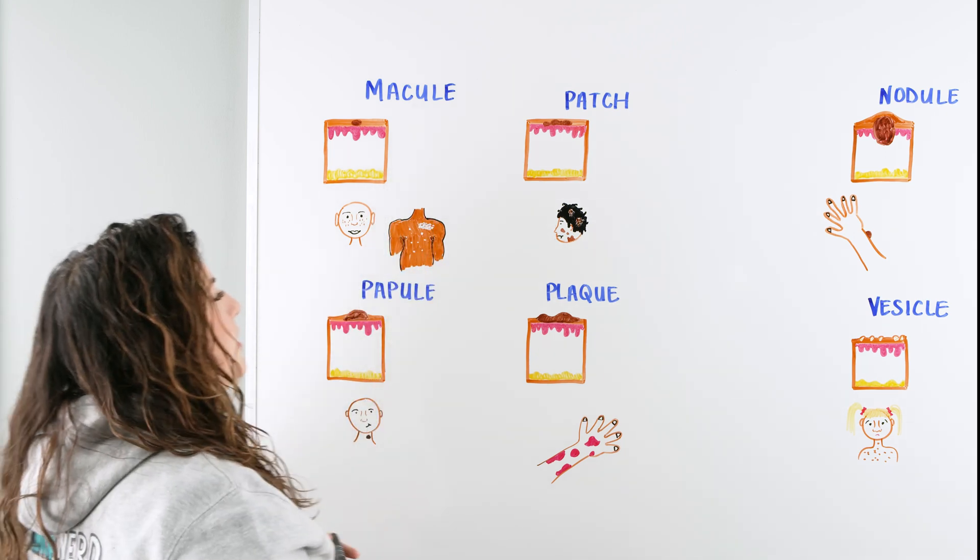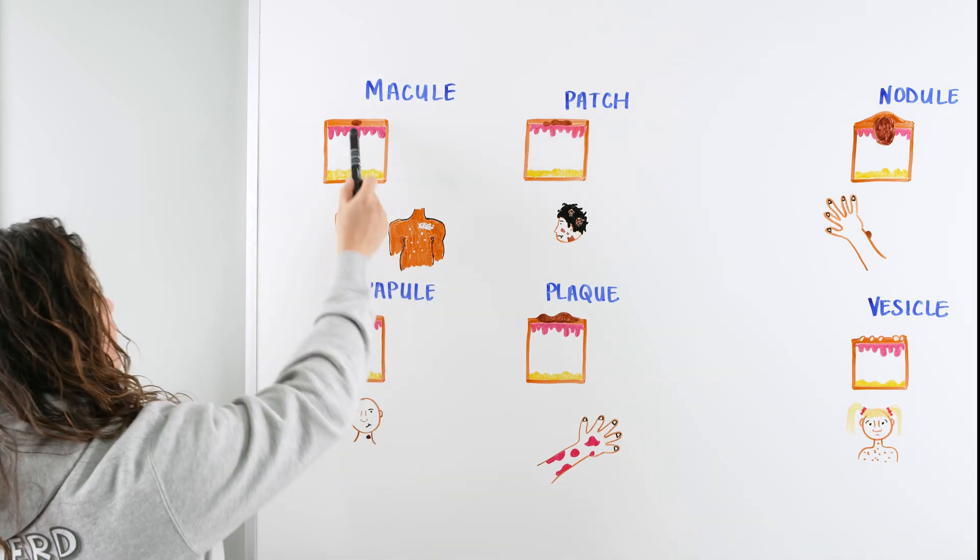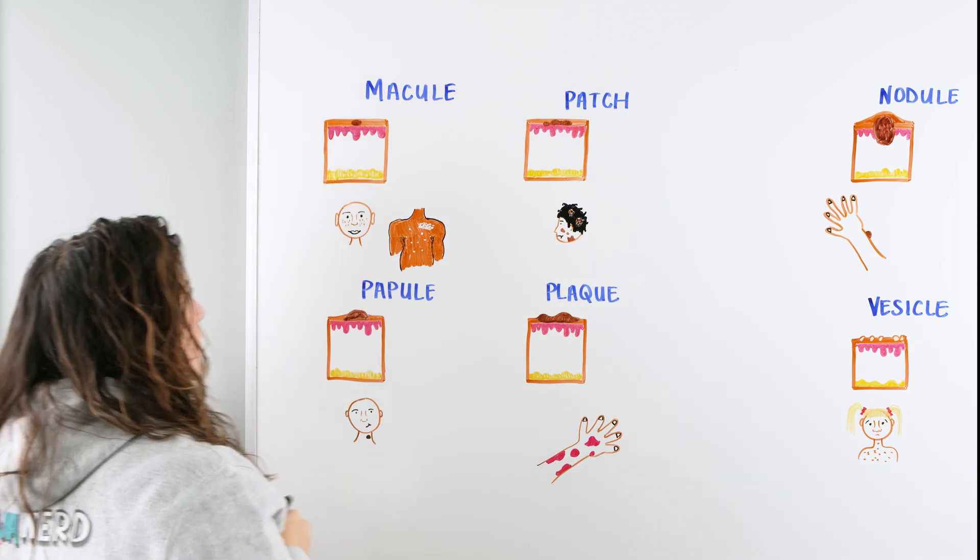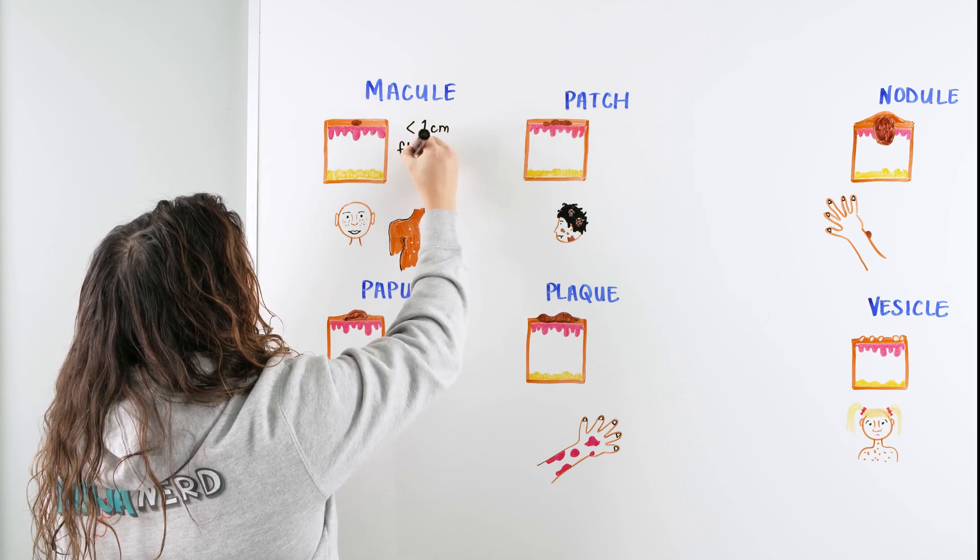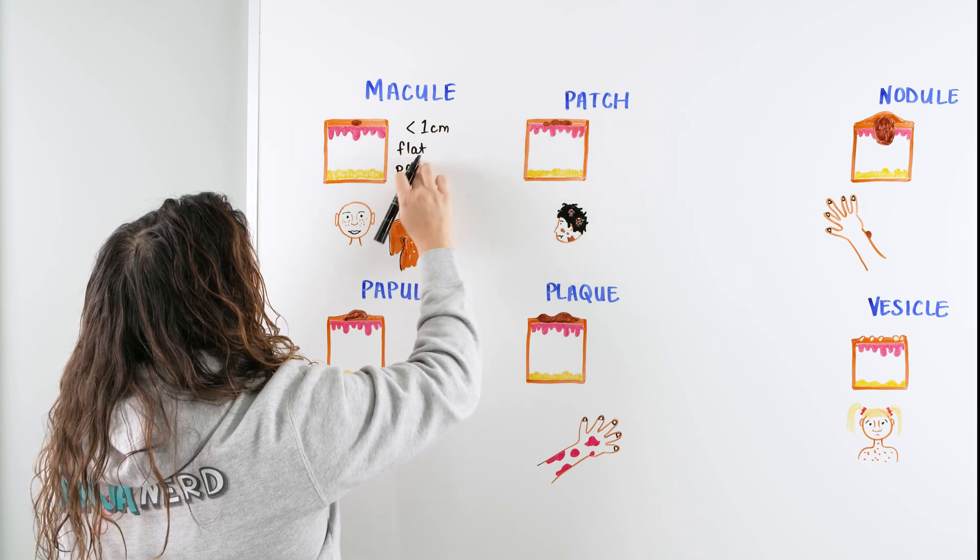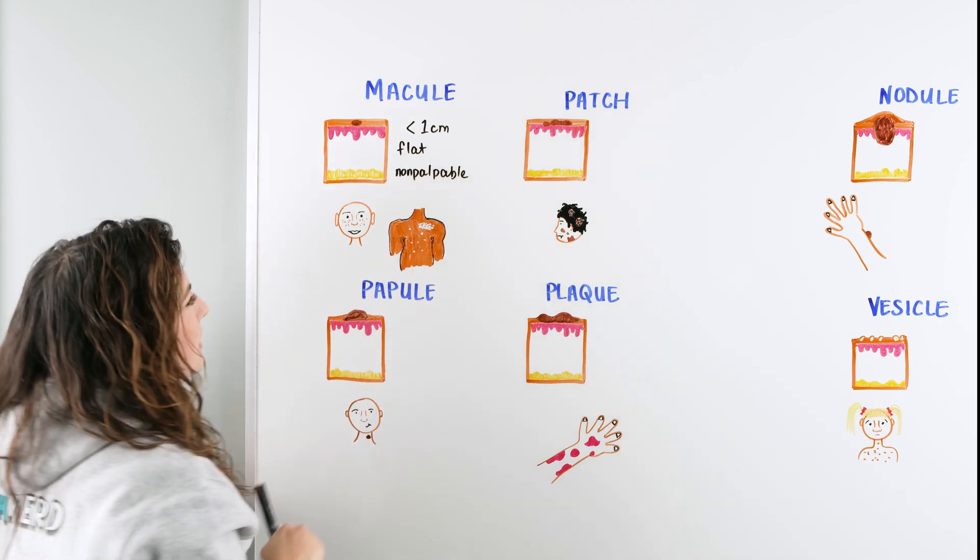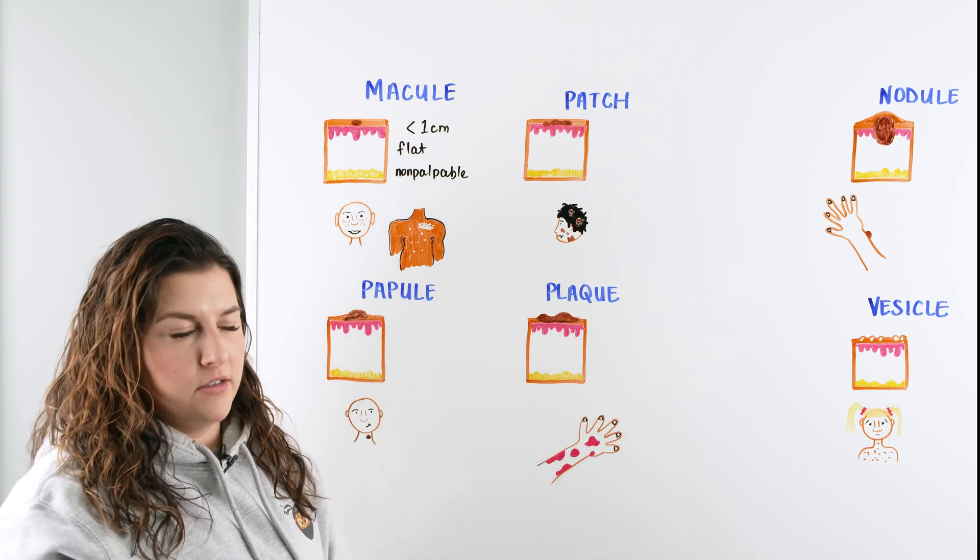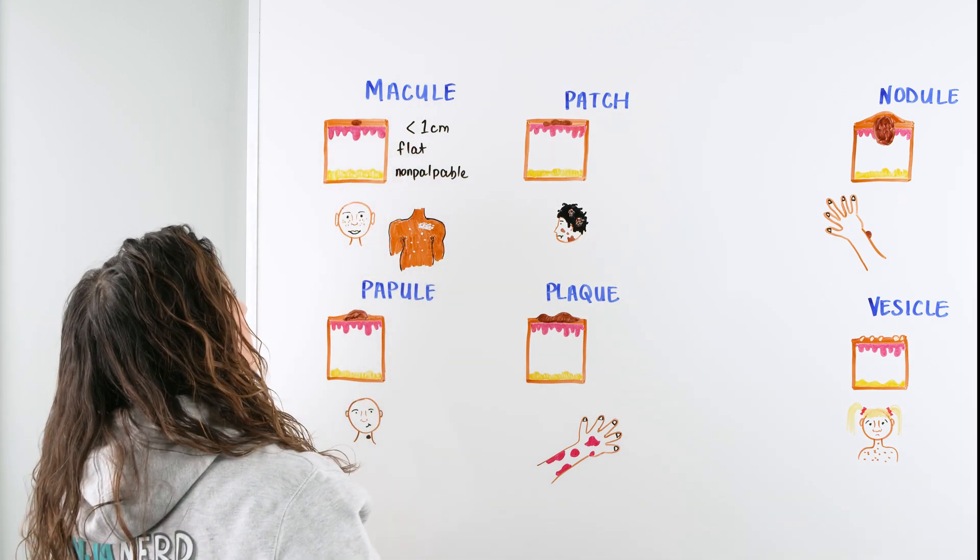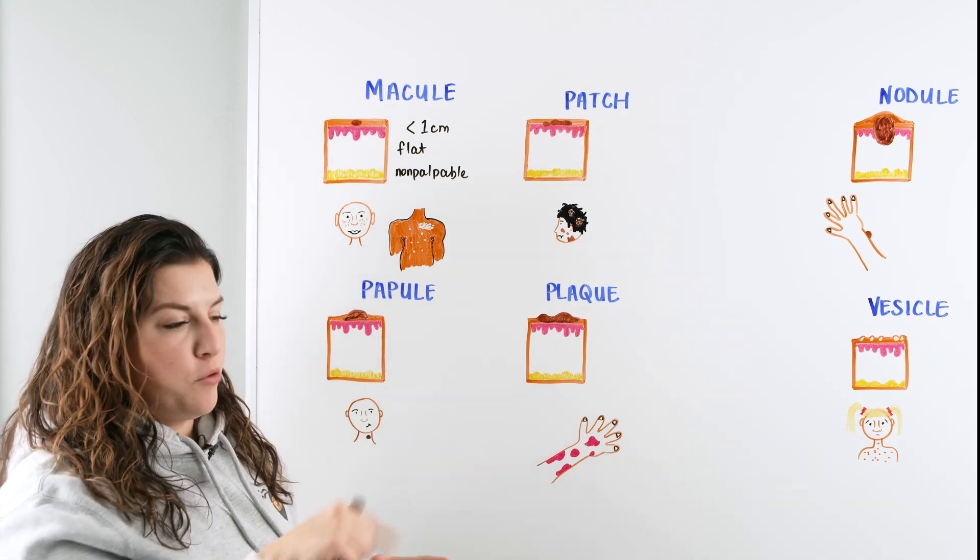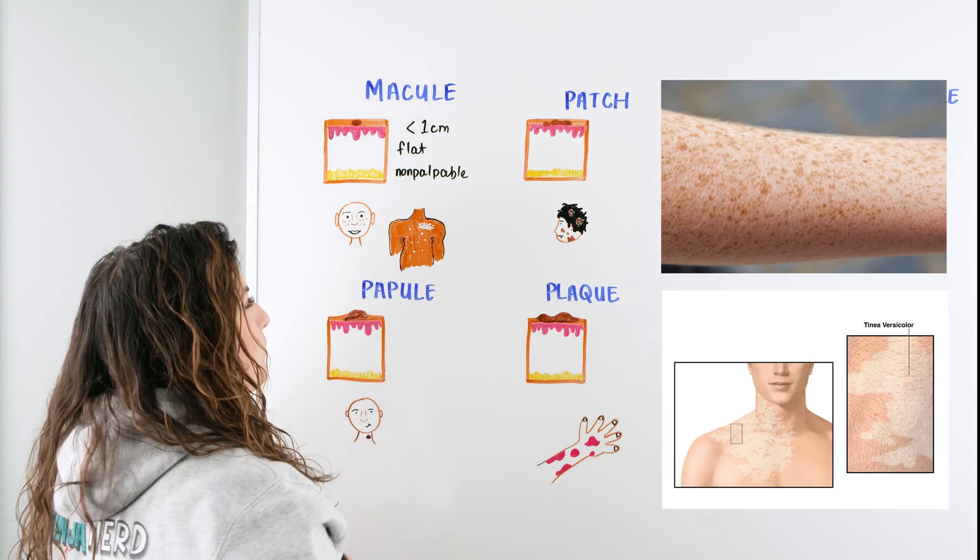First we're going to talk about the macule and the patch. When we talk about macule and patch, we're talking about very similar aspects, except there's just a difference in size. When we're looking at somebody's skin and we see this circumscribed or very defined kind of round darkening of the skin, it's typically going to be less than one centimeter in size. It's going to be flat or you can use another word as non-palpable.